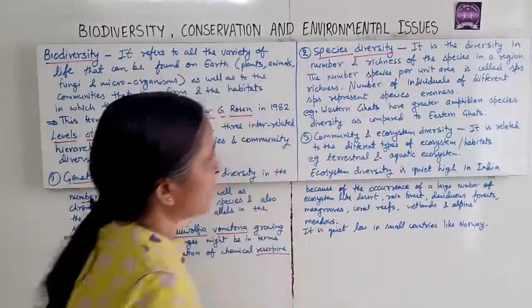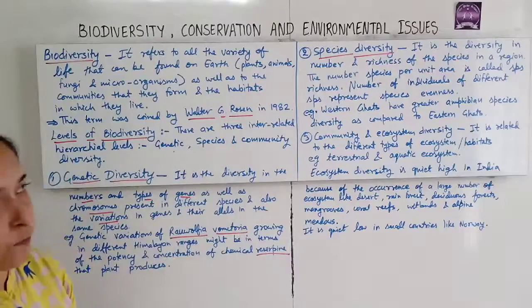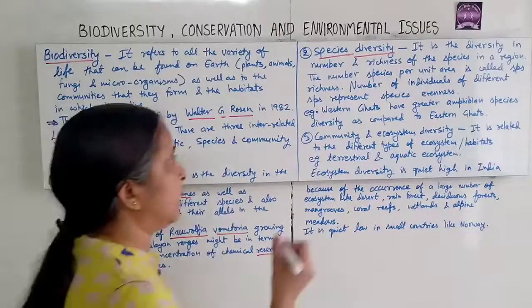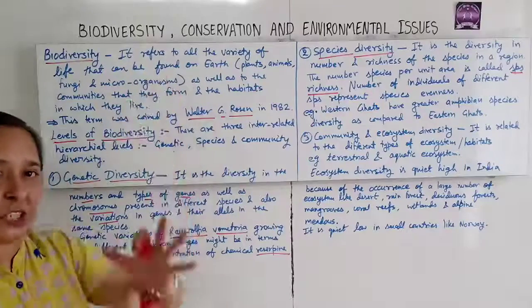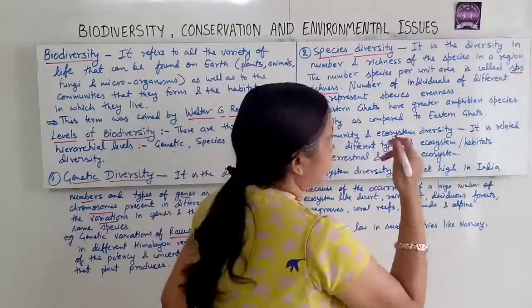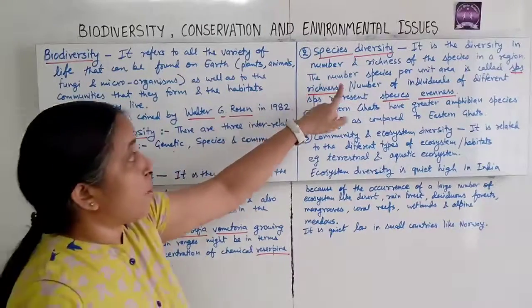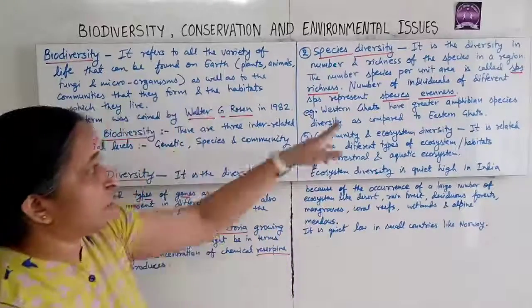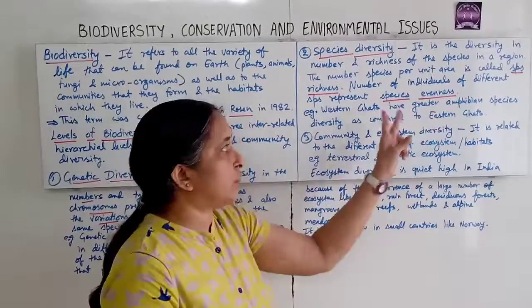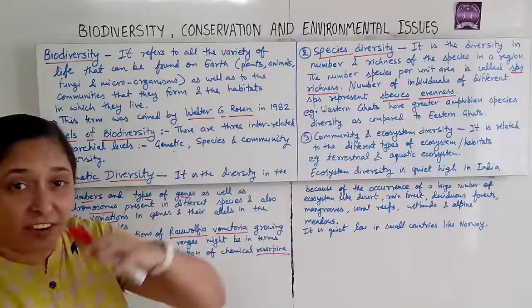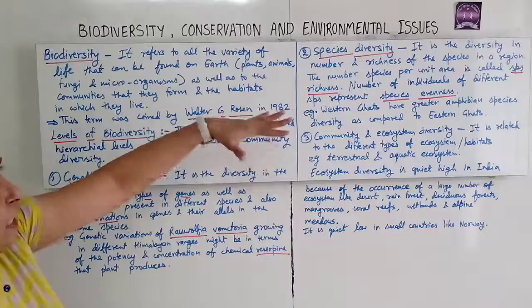Species diversity is the diversity in the number and richness of species in a region. The number of species per unit area is called species richness, and the number of individuals of different species present represents species evenness. For example, the Western Ghats have greater amphibian species diversity compared to the Eastern Ghats.